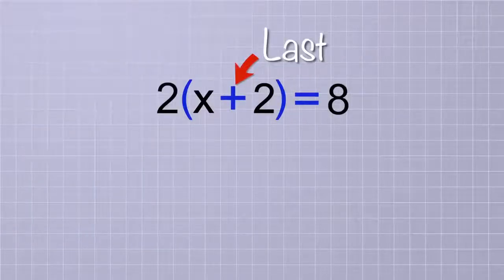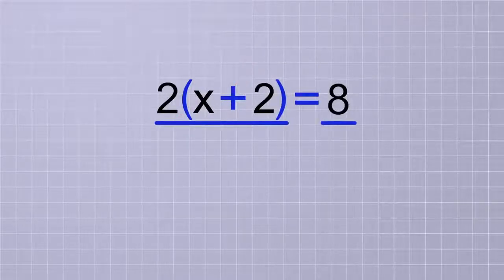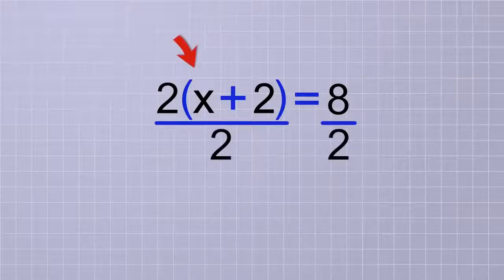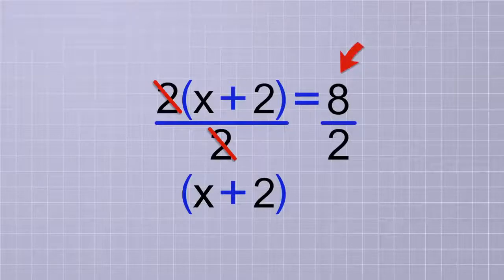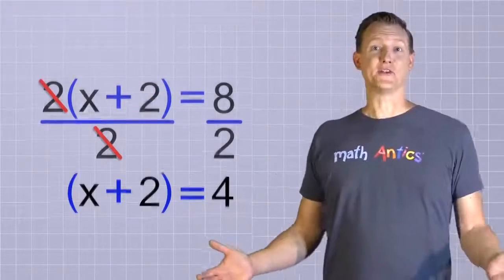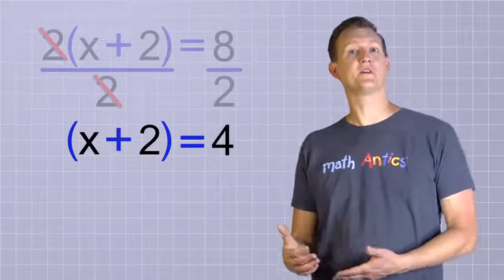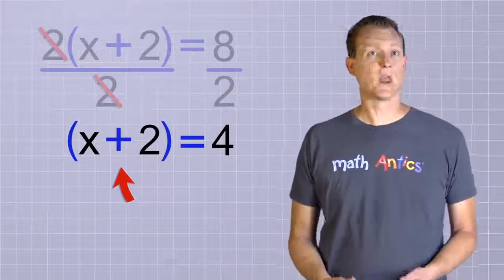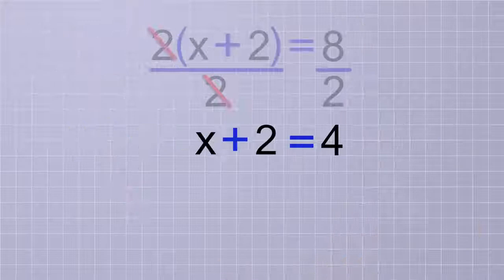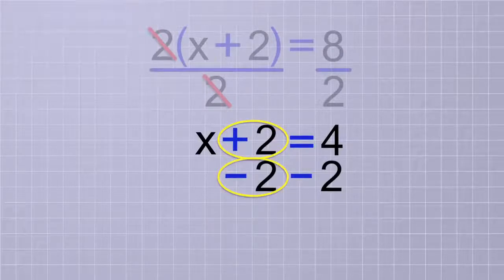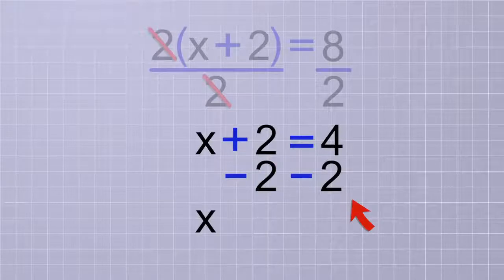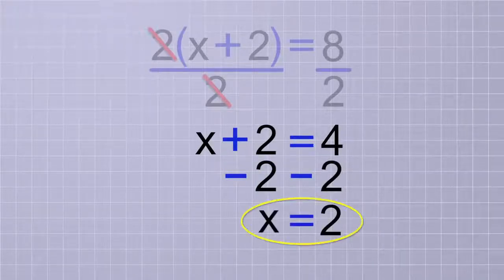So in this problem, we should start by undoing the multiplication that's implied between the 2 and the group x plus 2. To do that, we divide both sides of the equation by 2. The 2 on the top and the 2 on the bottom cancel, leaving the group x plus 2 on that side. And on the other side, 8 divided by 2 is 4. Now that there's nothing else on that side with the group x plus 2, we don't even need the parentheses anymore. Next, we just subtract 2 from both sides. The plus 2 and the minus 2 cancel out, leaving x all by itself. And on the other side, 4 minus 2 is 2. So for this equation, x equals 2. You can see how grouping operations differently results in different answers.